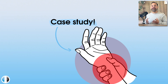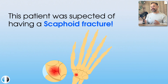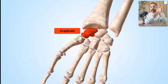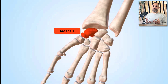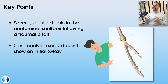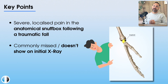This patient was suspected of having a scaphoid fracture. The scaphoid is one of the key bones in the first carpal row — in fact, it's the most lateral of the bones in the first carpal row. It's really commonly injured when we fall onto an outstretched hand, as a result of its positioning and the fact that it's directly under the thumb where we sometimes position our hand when we fall.